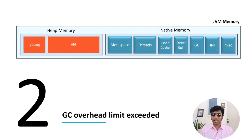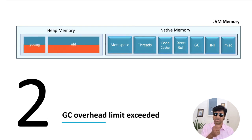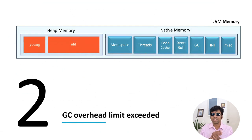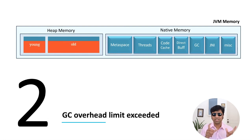This is the very same phenomenon that happens when you are experiencing java.lang.OutOfMemoryError: java heap space, which is the first type of out of memory error we discussed in the previous video. In fact, when you run the same program, sometimes it can throw java heap space, and other times the same program can throw this GC overhead limit exceeded. So the first type of error and this type of error can happen interchangeably.